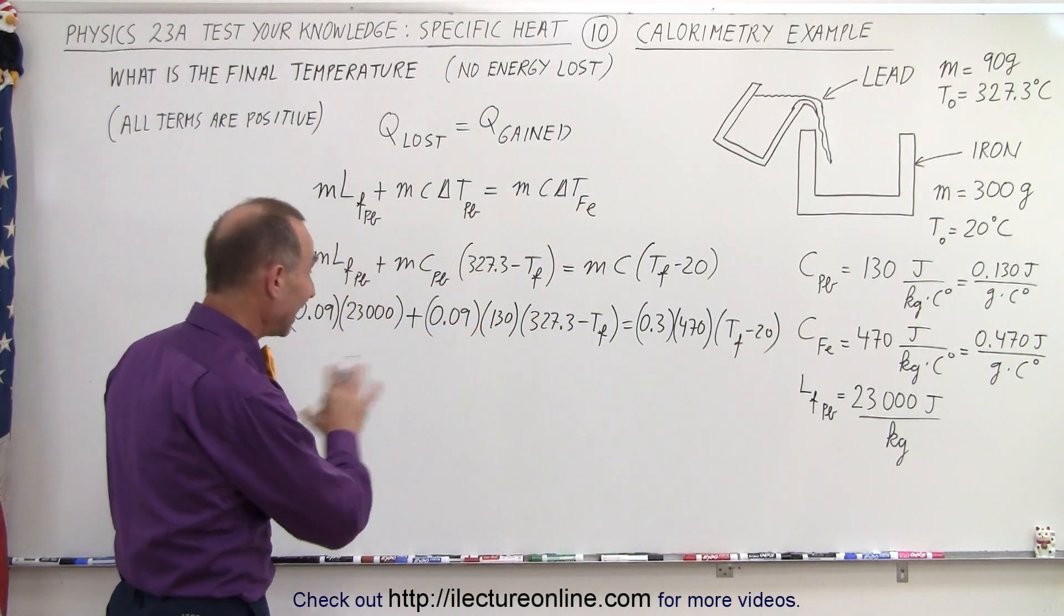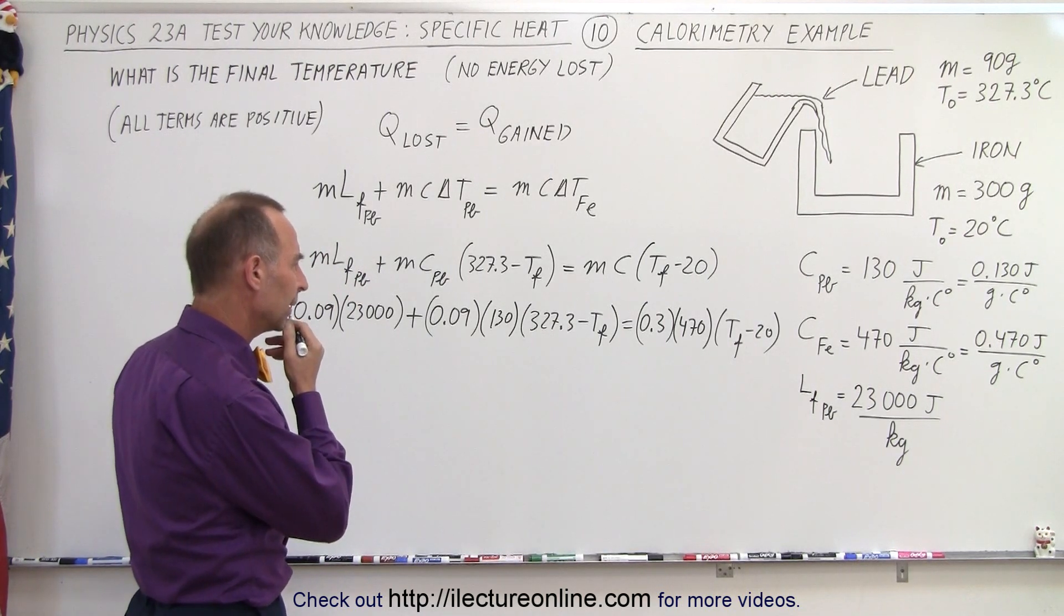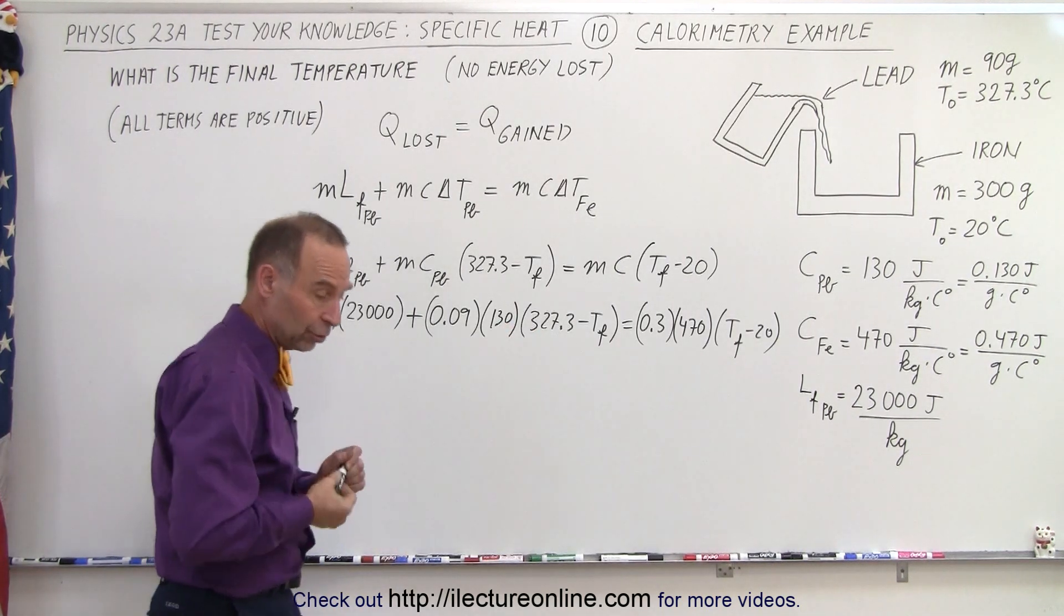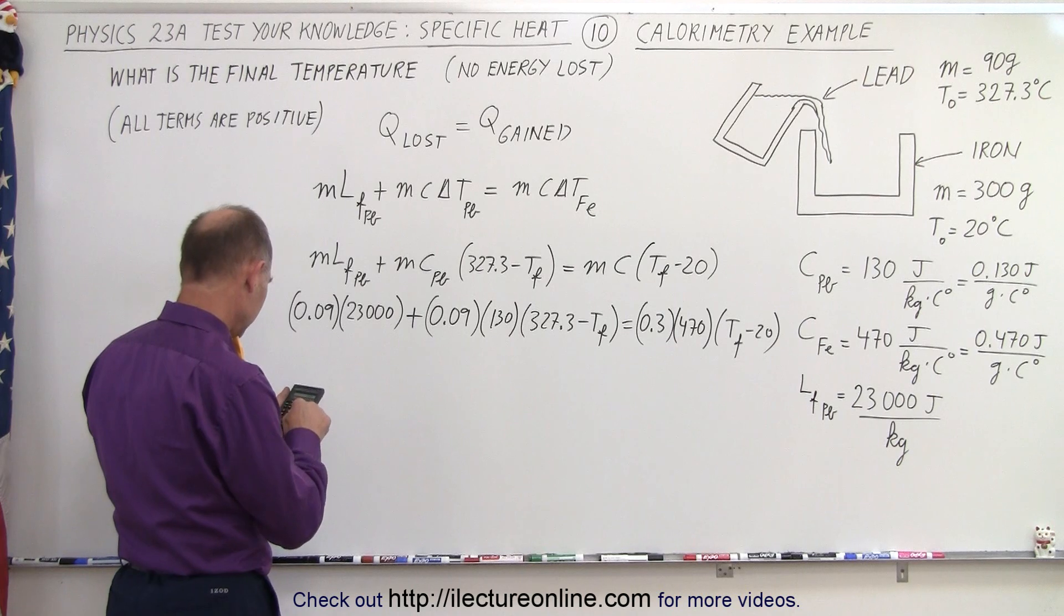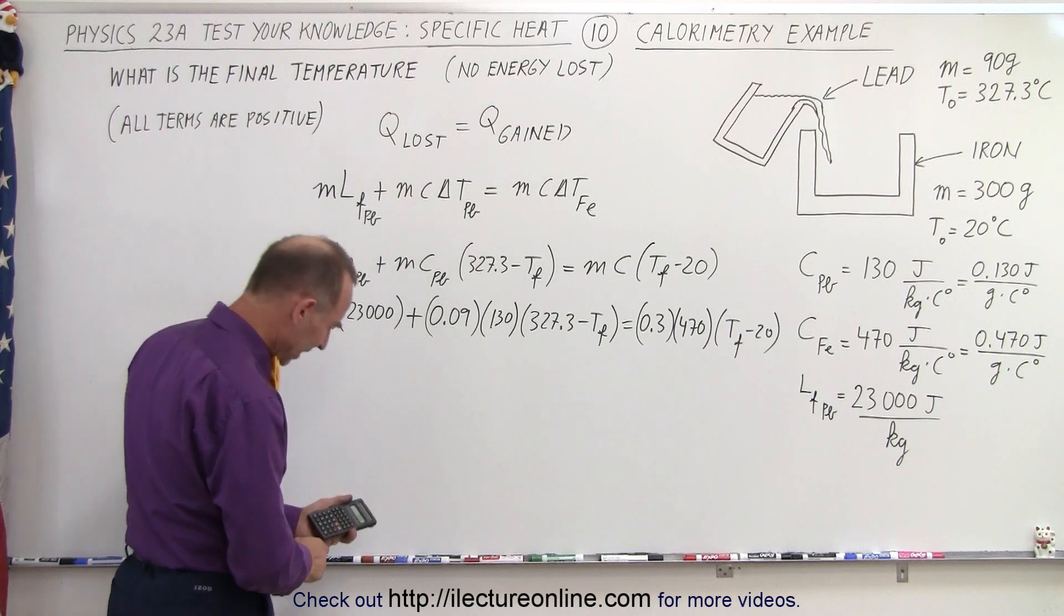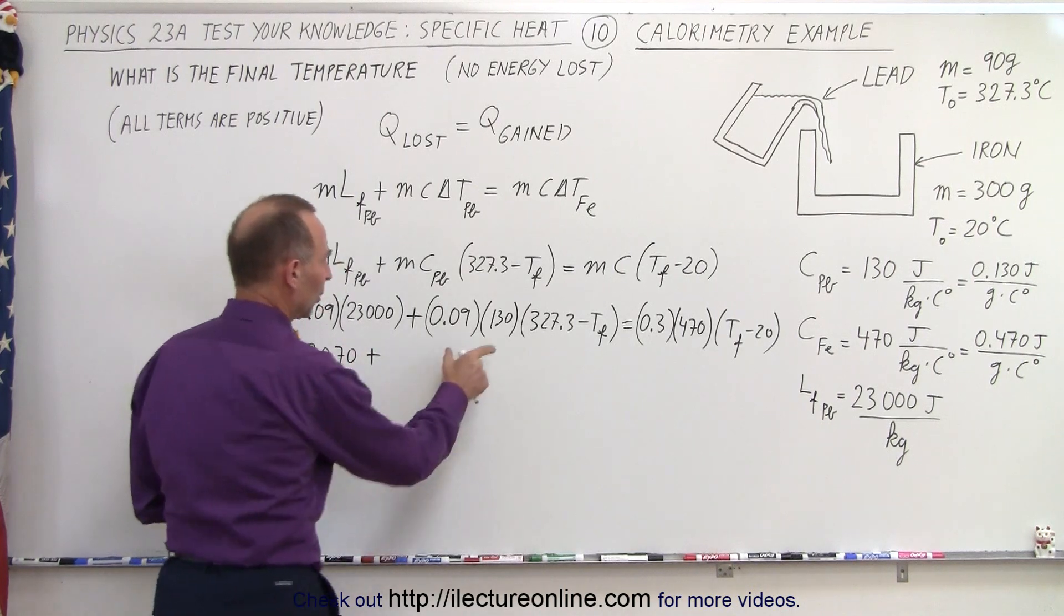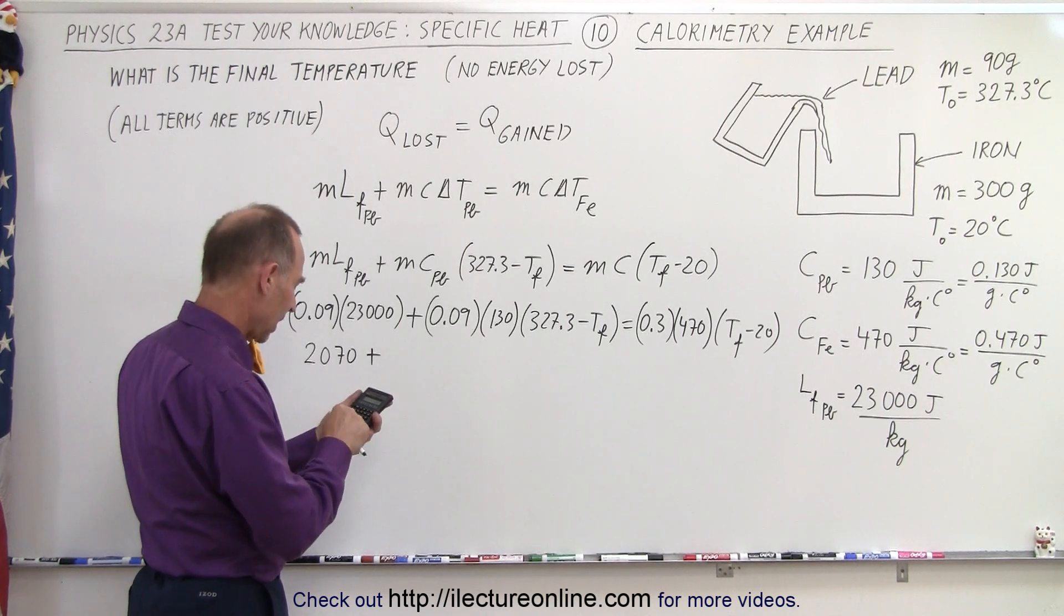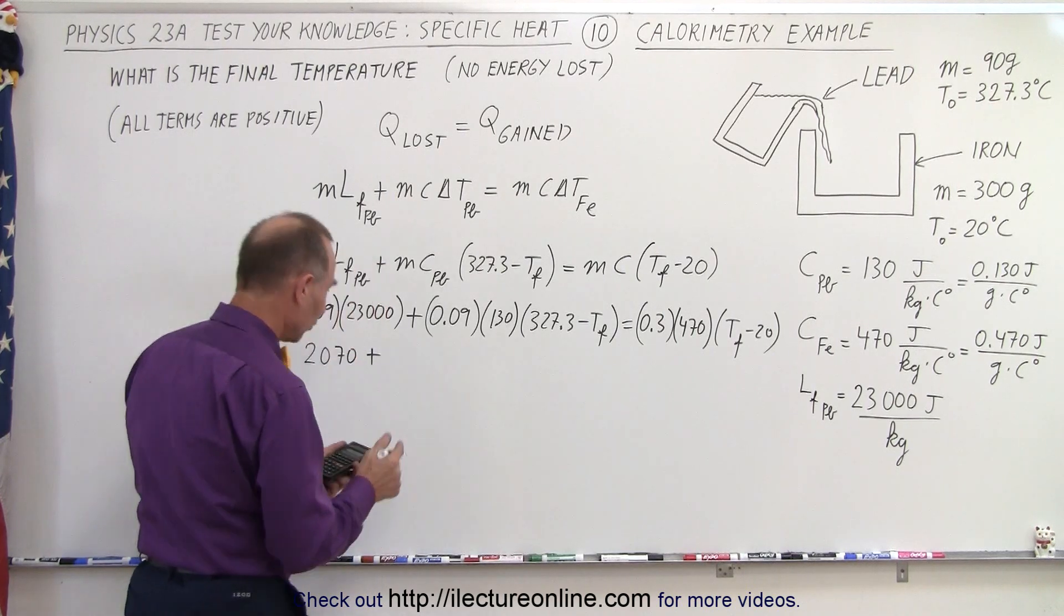And now all we have to do here is solve that equation for T final. Let's see here, we can put T final on the other side, that makes it positive. So I'm going to calculate some of these values to make them a little bit easier to work with. 0.09 times 23,000 equals 2,070, so that's 2,070 plus. Multiplying this together, we get 0.09 times 130, times 327.3.